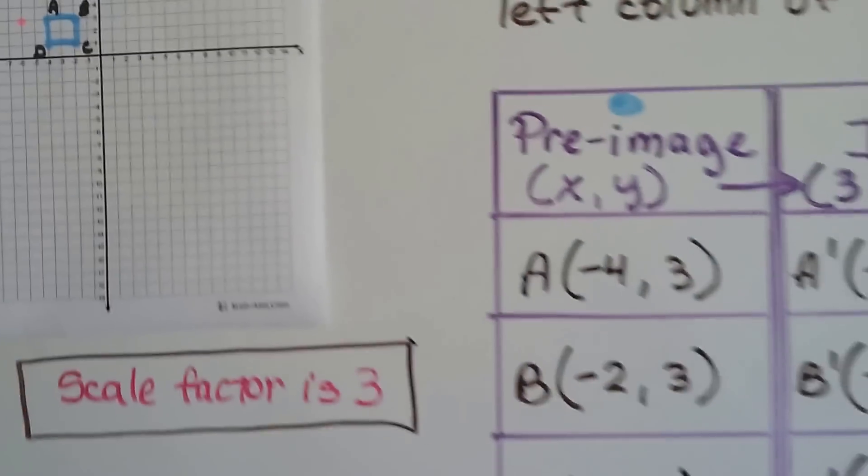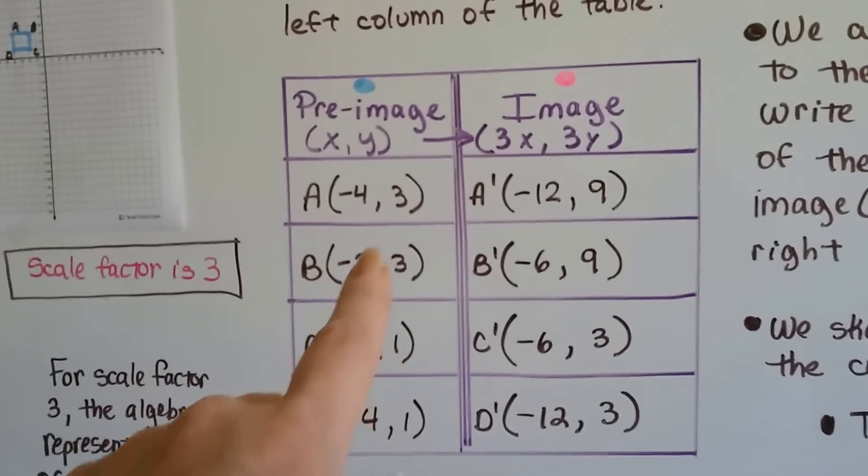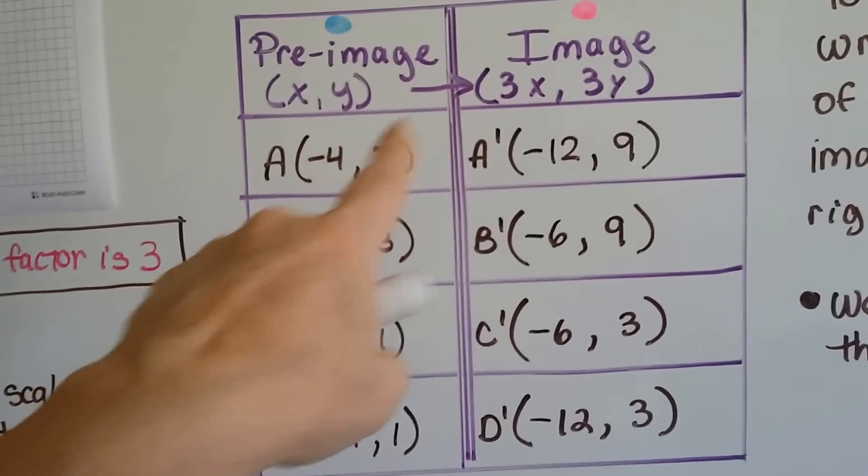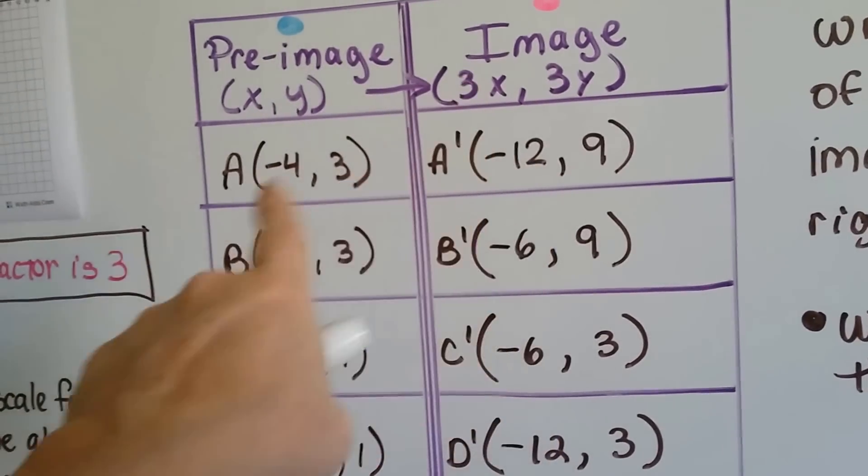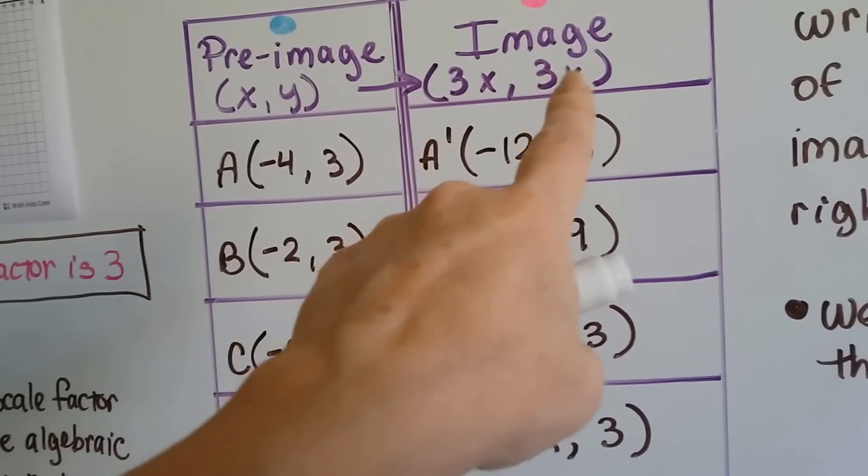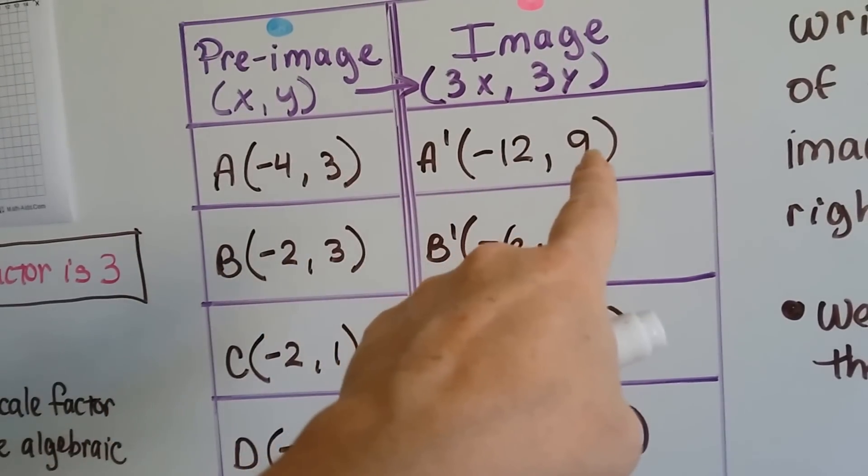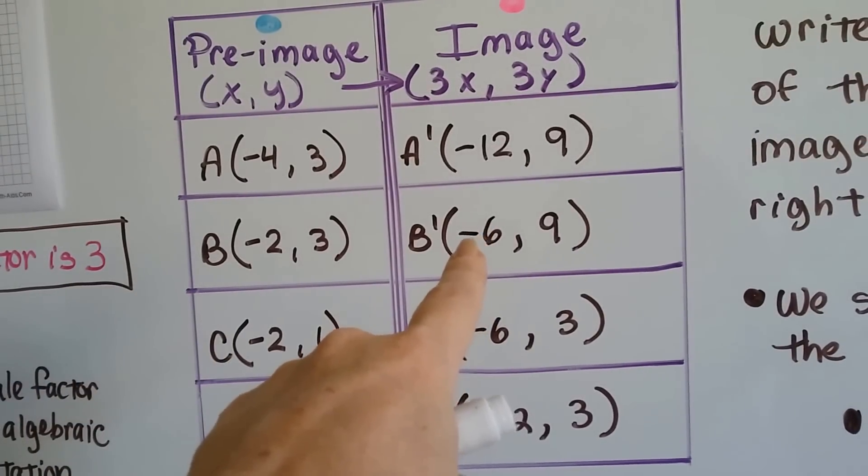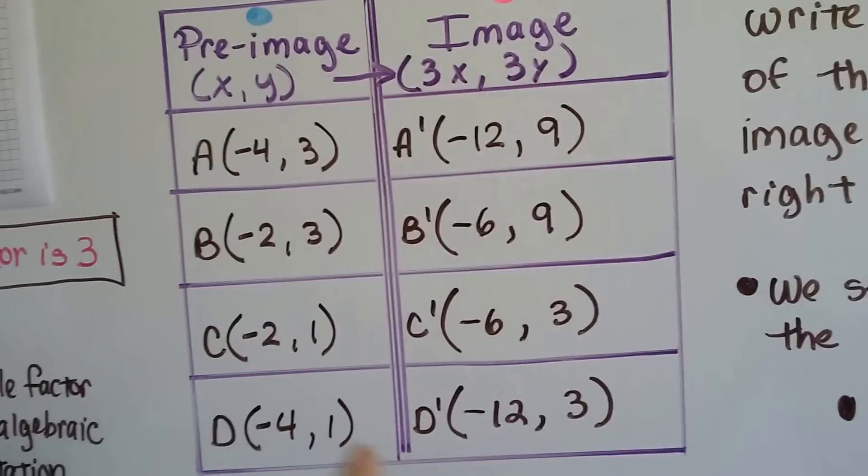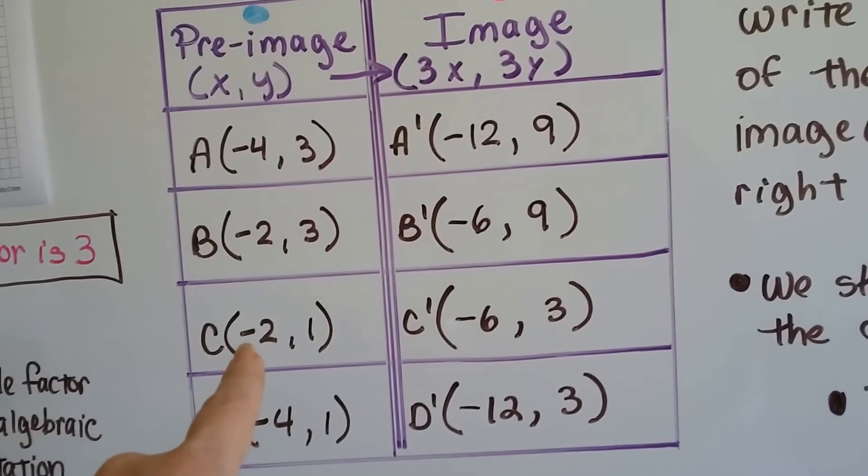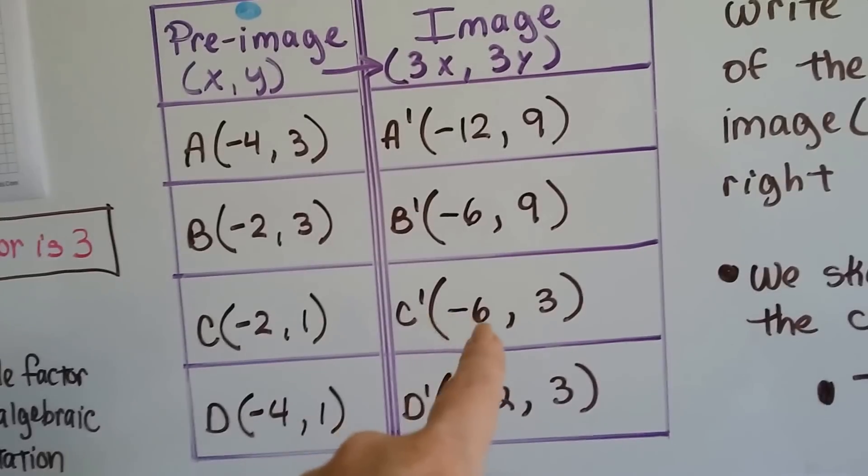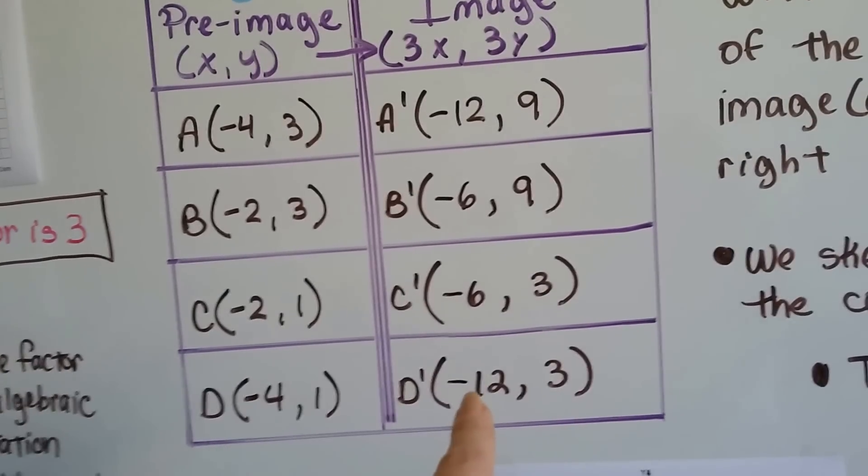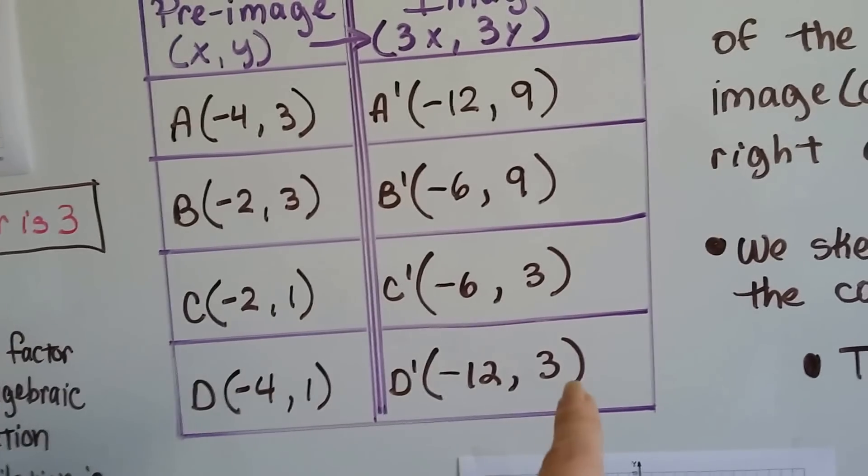So now that we have the coordinates for the pre-image, the original, all we have to do is multiply those values by 3, and we'll change it by a scale factor of 3. Negative 4 times 3 is negative 12. 3y times 3 is going to be 9 for the y. 3 times negative 2 is going to be negative 6, and 3y times 3 is a 9 for the y value. 3 times negative 2 for c is going to be negative 6 for c prime, and 3 times 1 is 3, and 3 times negative 4 is another negative 12, and 3y times 1 is a 3.